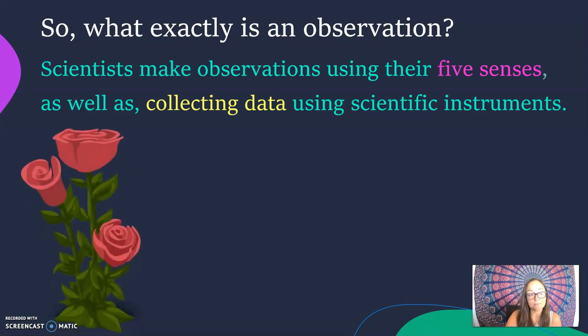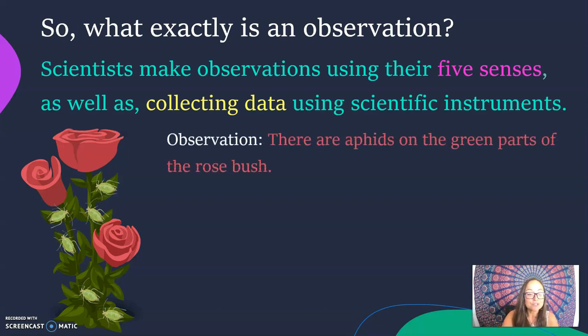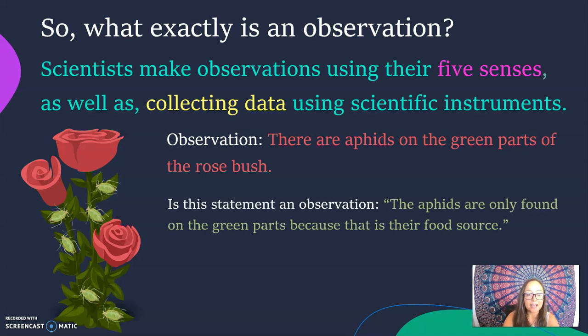So here if I have a rose bush and I notice or I observe some aphids, which are little insects on my rose bush. Throughout this video, as well as the next video, I'll be using this rose bush and aphid example to teach different ideas in science. So my observation is something I see: the aphids are on the green parts of the rose bush. I don't hear them, I don't taste them, I'm not touching the aphids, but I can see them, and that would be the five senses. And then I would collect data and I could count like right here I see six aphids on the rose bush.